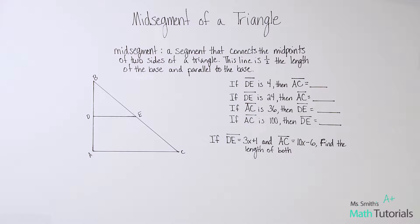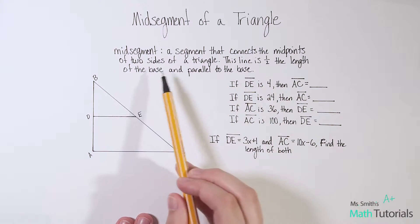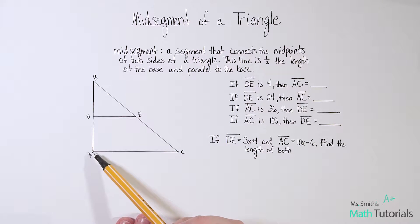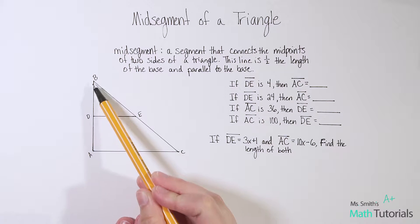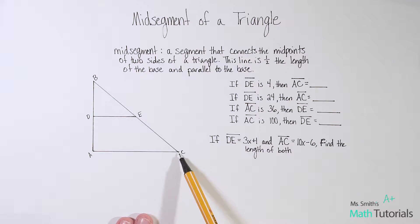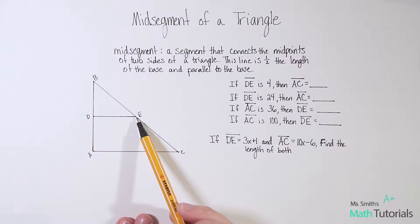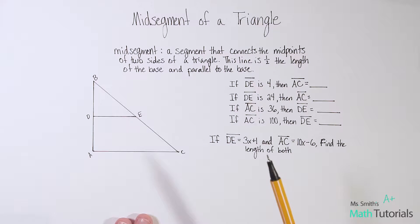So a mid-segment is a segment that connects the midpoints of two sides of a triangle. For example here, if you looked at this side A, B, D would be the midpoint between A and B. And over on this side, if we have C and B, E would be the midpoint of CB. So once we establish these two are midpoints, then the line segment connecting them is a mid-segment.